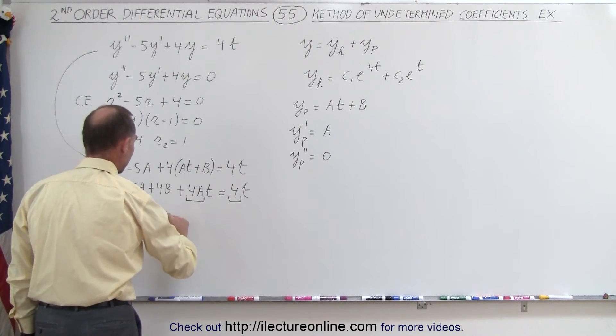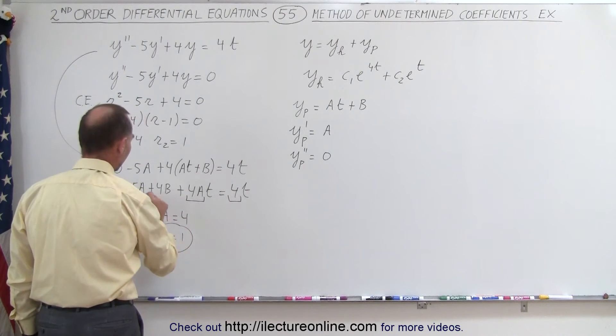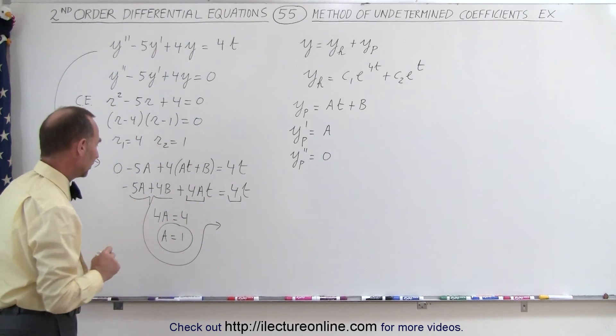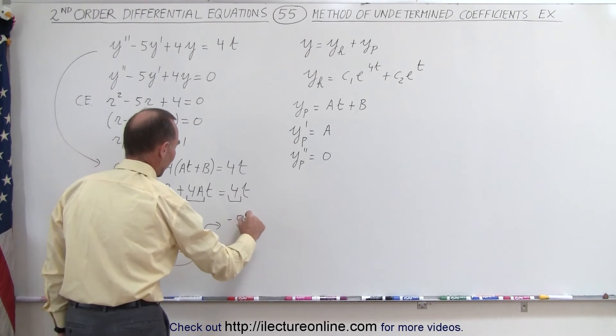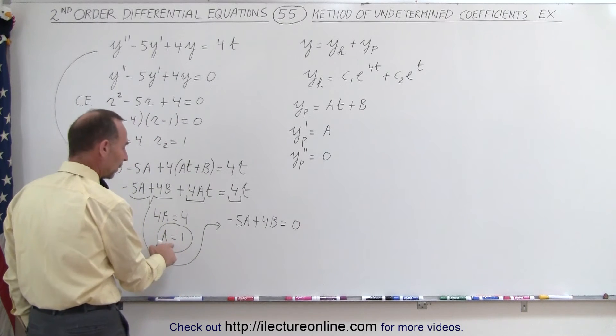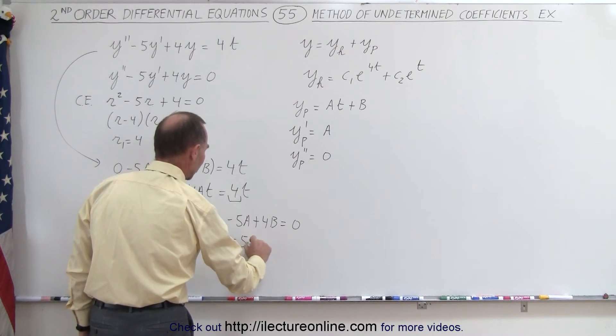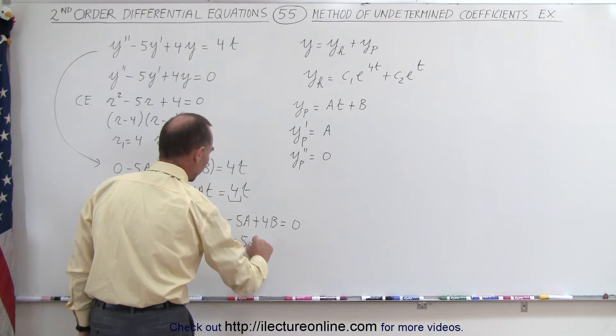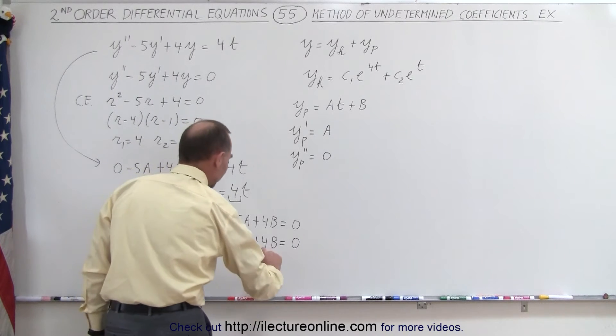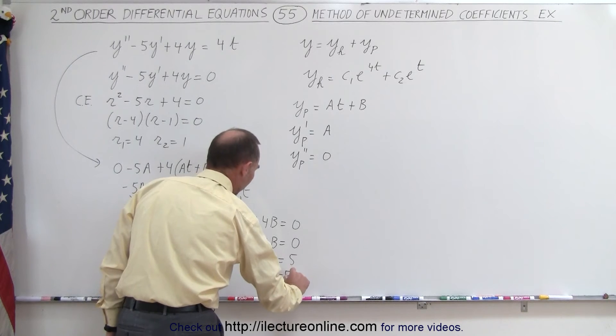So 4A = 4, which means A = 1. And then from here, we can then have our second equation. So then we can say that -5A + 4B = 0. And since we already know what A is equal to, A = 1, so -5 + 4B = 0, which means that 4B = 5, and B = 5/4.